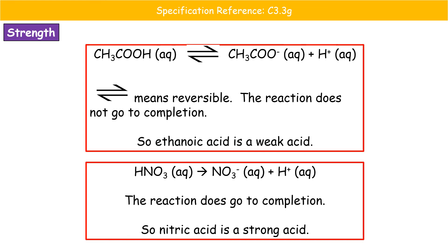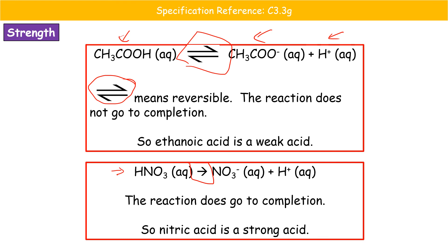We can always spot a weak acid because of the reversible reaction sign. The reversible arrow means it's only ever partially ionized because the ions can reform the whole molecule. If we see a standard arrow (as in the nitric acid example underneath), it can't reform — it goes to completion — meaning it's a strong acid.